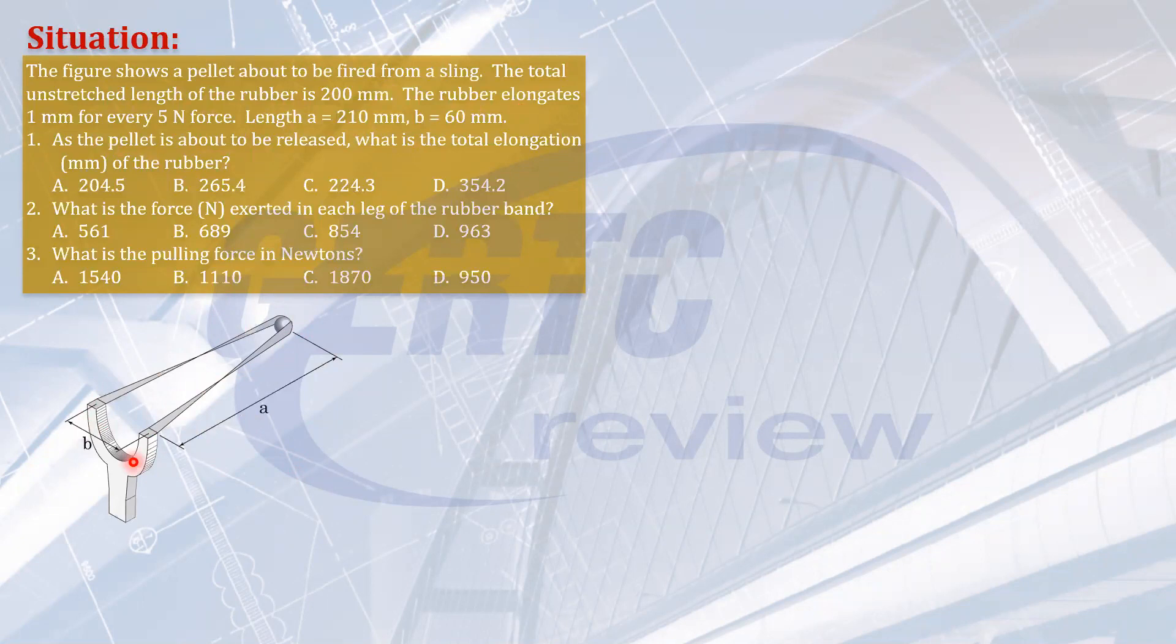First question: as the pellet is about to be released, what is the total elongation of the rubber? Second question: what is the force exerted on each leg of the rubber band? And the third part: what is the pulling force in newtons required to pull this pellet by this length?